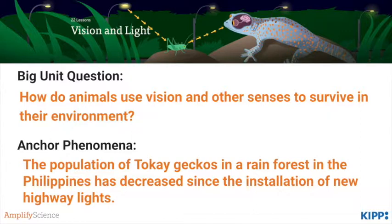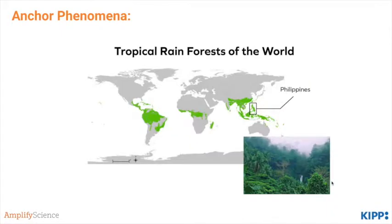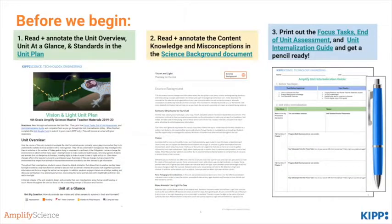The geckos are having trouble surviving in their environment and the only change has to do with highway lights. Throughout this unit, students will come back to the question of why these tokay geckos are disappearing. They learn about where the Philippines are located, the fact that it's a tropical rainforest, and compare the environment before the highway lights with after, ultimately concluding that tokay geckos are very sensitive to light and can't see their prey when there's too much light, even at night. Before we begin, please have copies of the focus task and unit assessment and a pen or pencil to answer questions as we go through this video.